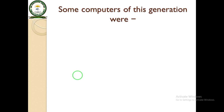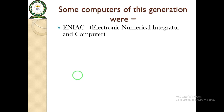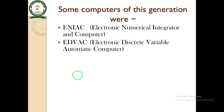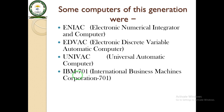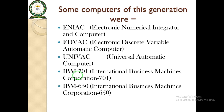Some computers of this generation include: ENIAC (Electronic Numerical Integrator and Computer), EDVAC (Electronic Discrete Variable Automatic Computer), UNIVAC (Universal Automatic Computer), IBM 701, and IBM 650.